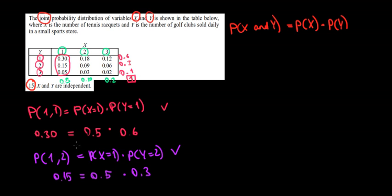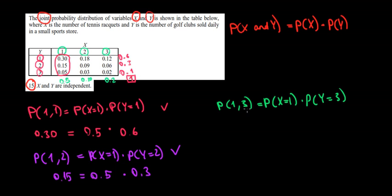Now we do the same for the next relationship: the probability of x equals 1 and y equals 3. It should equal the probability that x is 1 times the probability of y being equal to 3. The probability of x equals 1 is 0.5. The probability of y equals 3 is 0.1. We multiply them and get 0.05 — and that's exactly what we see in that cell. So one more relationship checked.